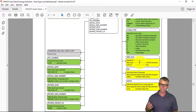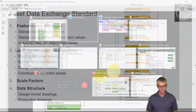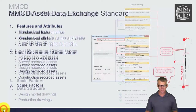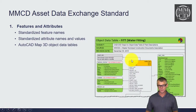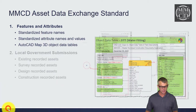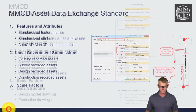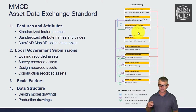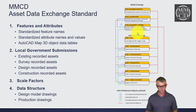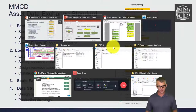Remember that if you're designing with Civil 3D, much of this information wouldn't be required in the object data tables because it could be extracted directly from the Civil 3D objects. The main crux of the Asset Data Exchange standard are these object data tables and attribution. However, for submissions we also need to be cognizant of the data structure and have consistency in how that data is assembled for submission to the local government.